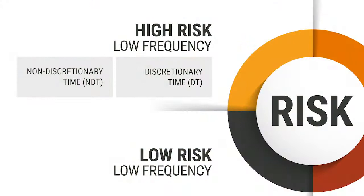If you're looking at that top left box, you'll see it's divided into two areas: the DTs and the NDTs. DT — discretionary time — you've got time to think before you act. NDT — non-discretionary time — you have no time to think, you have to act immediately.